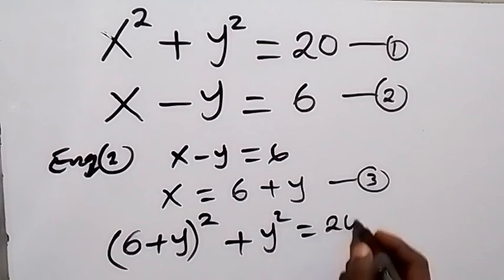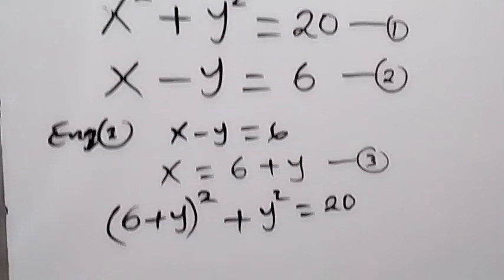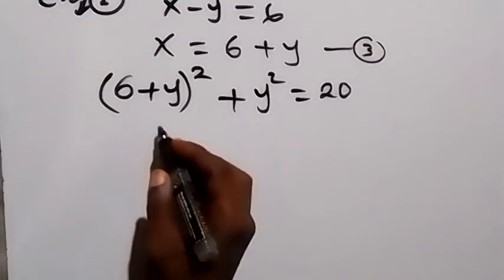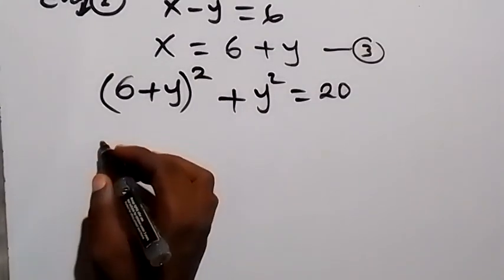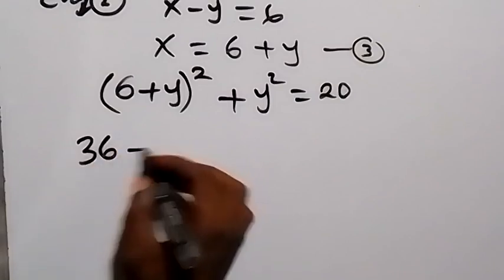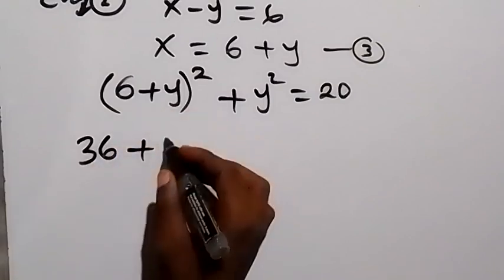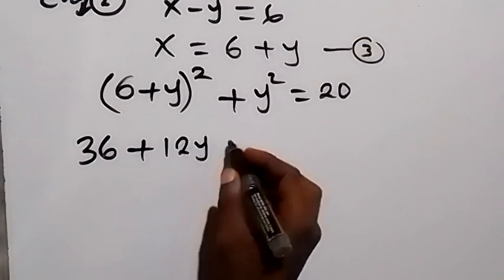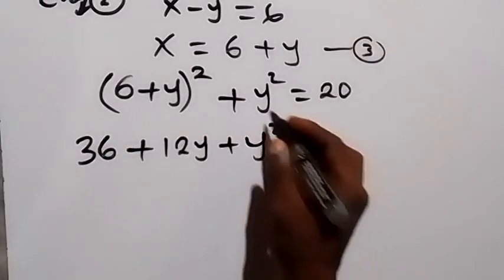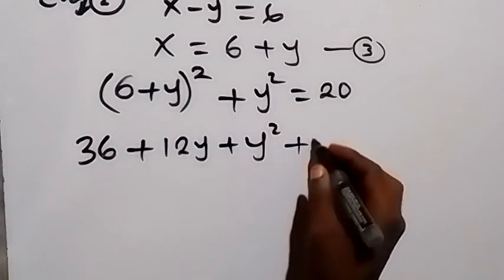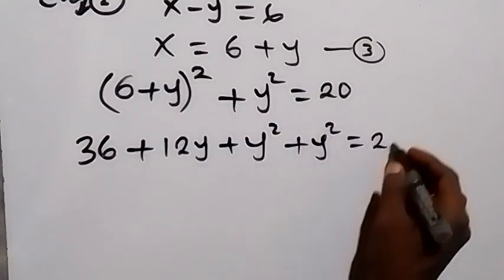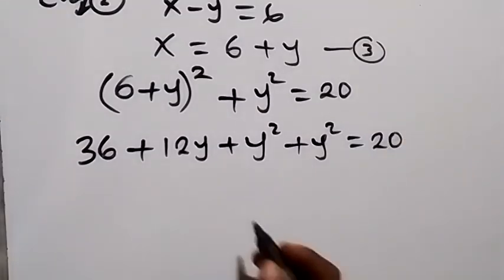Expanding (6 plus y) squared, we get 36 plus 12y plus y squared. Adding the remaining y squared from equation 1, we have 36 plus 12y plus y squared plus y squared equals 20.